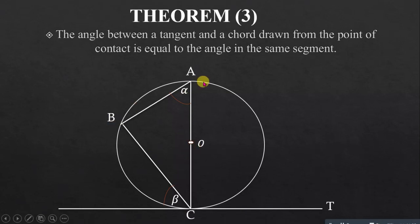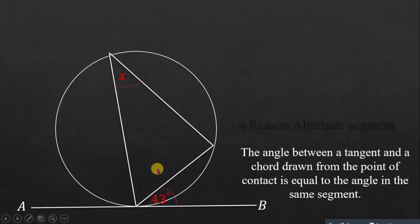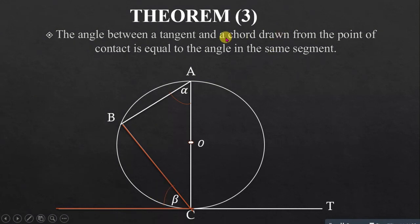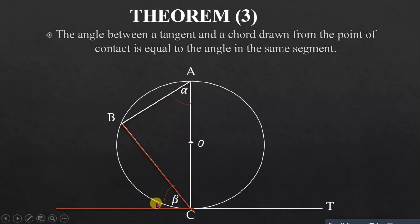With center O and triangle ABC formed inside the circle, the angle formed between the tangent and chord at the point of contact equals the angle formed at the top of the triangle in the same segment. So alpha equals beta. The chord AC divides the circle into two segments, and if the angle is in the same segment as the angle formed by the tangent-chord pair, they are equal.